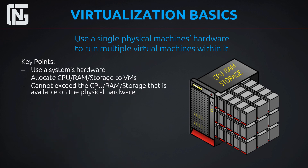Here are some key points. We use the system's hardware, and for each virtual machine we allocate an amount of processor — CPU — RAM, which is memory, and storage space. We allocate a certain amount of each of those to each individual VM, so the total amount of CPU, RAM and storage we're using on our VMs cannot exceed what's available on our hardware.